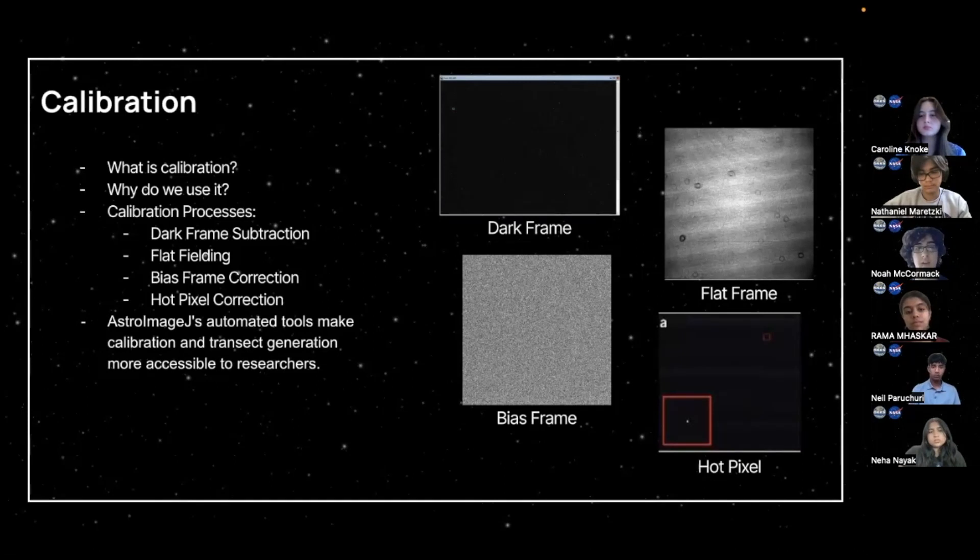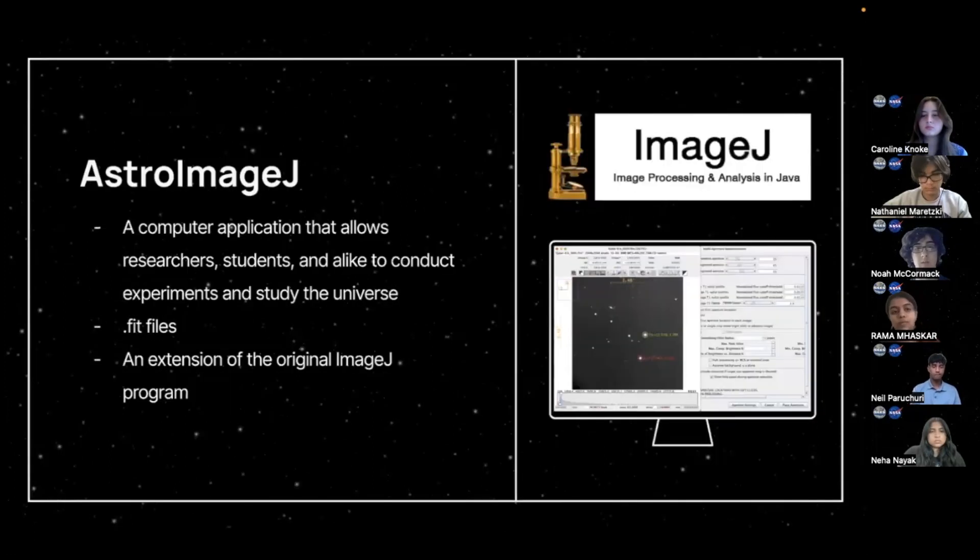So, AstroImageJ is a user-friendly interface with automated tools, making calibration transit generation more accessible to researchers. Accurate calibrations and transit analysis play a vital role in advancing our understanding of exoplanets and their characteristics.